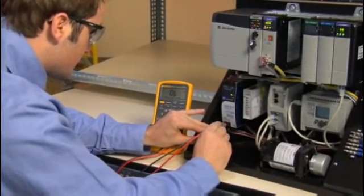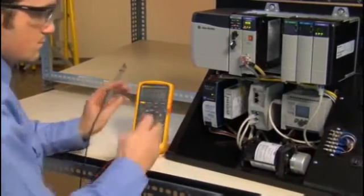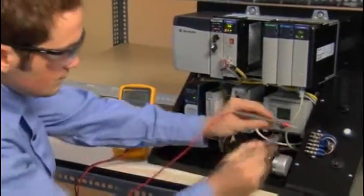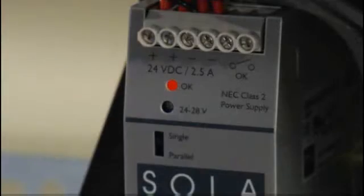So first thing, we take out our DMM and measure the line input voltage, then the DC output voltage. Everything looks good, but a couple hours later, that error light is back on. Now what?